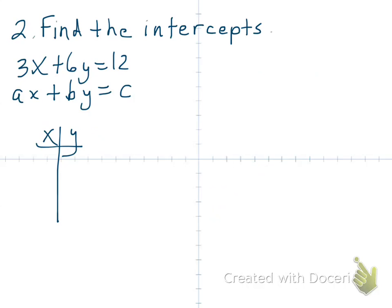Normally I like to make a little chart. To find the intercepts you're either letting x be 0 or y be 0. When we let x be 0, we find the y-intercept. If we let x be 0, that part zeros out and you're left with 6y equals 12, so you get y equals 2. So when x is 0, y equals 2.